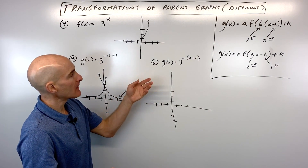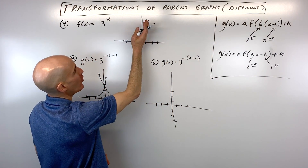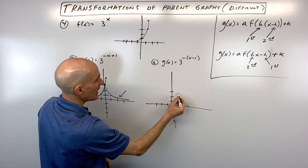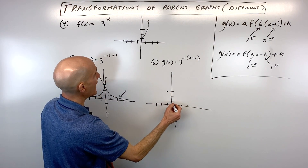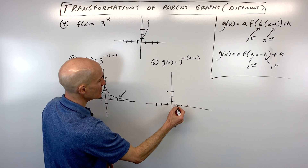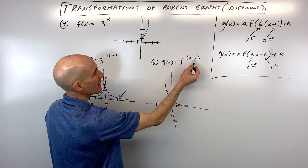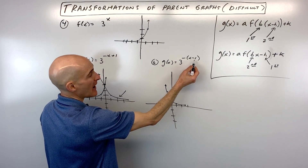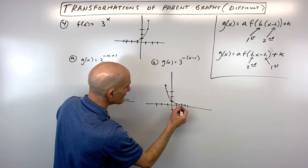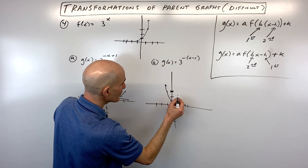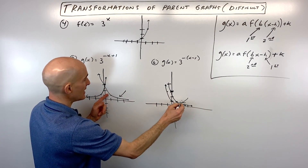For version B, 3^(−(x − 1)), the negative is factored out — first form — so we reflect over the y-axis first. The point (1, 3) becomes (−1, 3); the point on the y-axis stays; the other key point reflects to its mirror position. Then we shift right 1 (opposite of minus 1): each reflected point moves right 1, giving us the exact same final graph as version A.